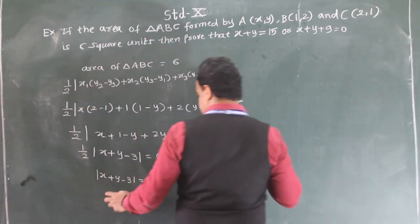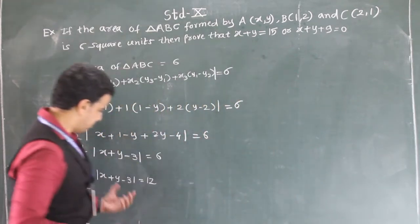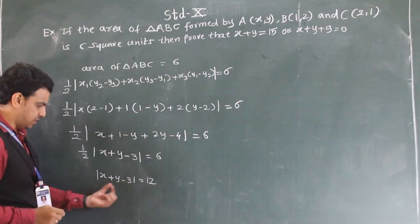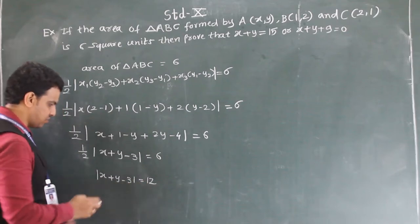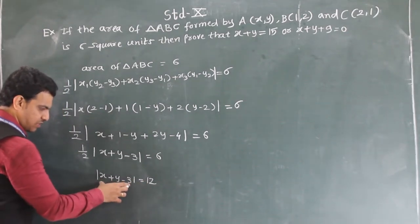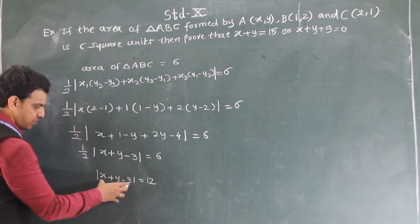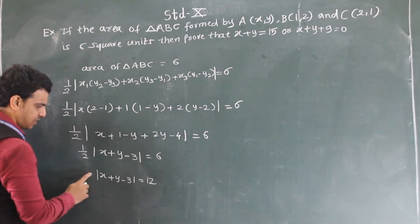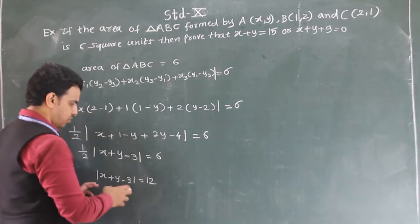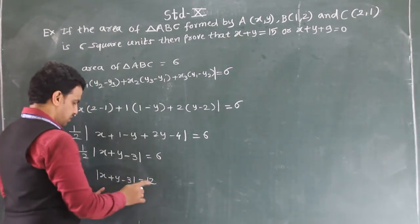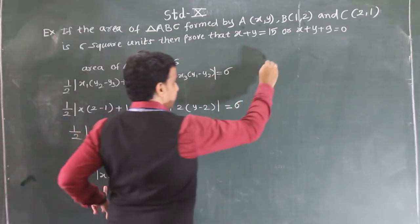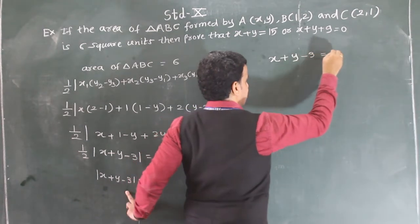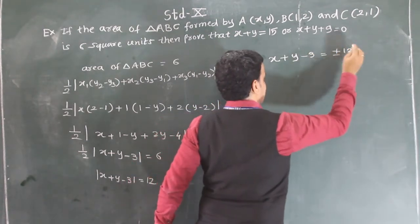Now if we remove the modulus sign, we give a plus-minus sign, because we don't know whether the expression inside is negative or positive. So x + y - 3 = ±12.